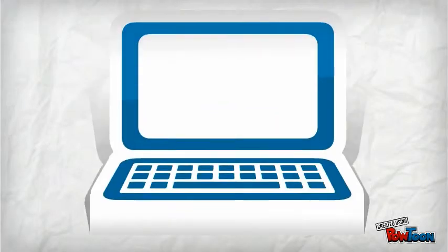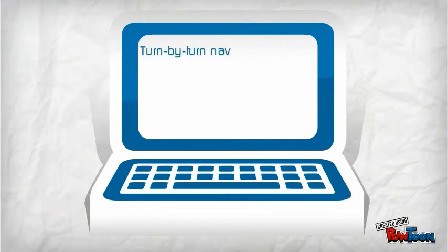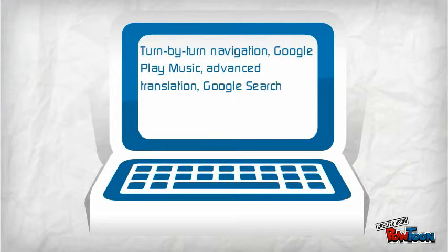The features of Google Glass include turn-by-turn navigation using Google Maps, Google Play Music, advanced translation. For example, point the glasses to a sign in French and it will translate it to English on the sign, Google search, a camera, and a compass.